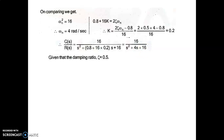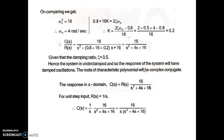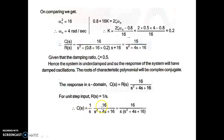Since ζ = 0.5, the system is underdamped, and the roots of the characteristic polynomial are complex conjugates. To find c(t), we multiply the transfer function by the input R(s). For a unit step input, r(t) = unit step, so R(s) = 1/s. Therefore C(s) = (1/s) × 16 / (s² + 4s + 16).